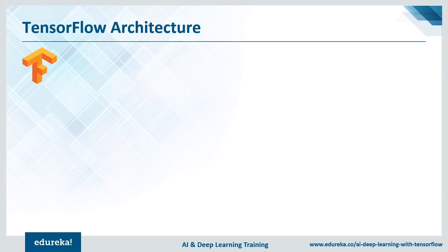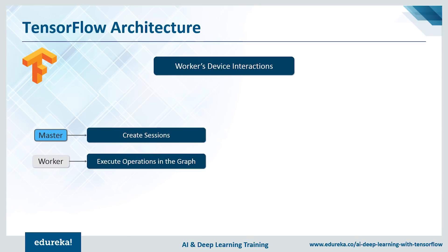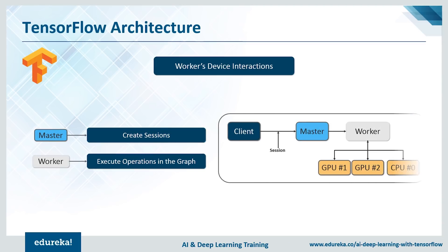Let's take a look at worker-device interactions. A master creates sessions for the workers, and the workers execute operations in the graph. We have a client who codes, the master creates a session, and the workers process the data and provide the necessary output. The worker service for each task handles requests from the master, schedules execution of the kernels, and mediates direct communication between tasks, while TensorFlow is optimized for running large graphs with low overhead.